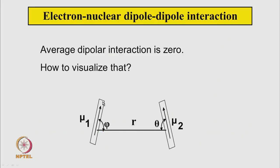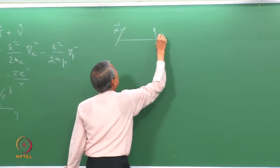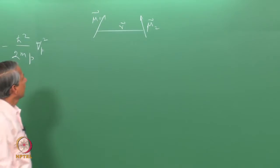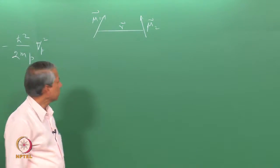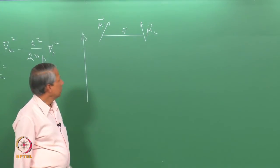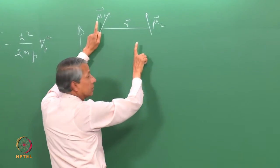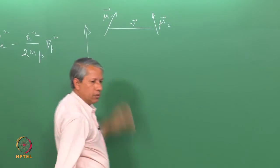Here is a schematic representation of two magnets, μ₁ and μ₂, kept at distance r. μ₁ forms angle φ with respect to r and μ₂ forms angle θ. If we keep them in a magnetic field, both will align along the field. As the orientation changes — for example, when the second magnet moves from one arrangement to another — the energy changes. When the two magnets are parallel with north pointing to north, the energy is repulsive (positive). When the second magnet is positioned above μ₁ with north pointing to south, the interaction is attractive (negative energy).